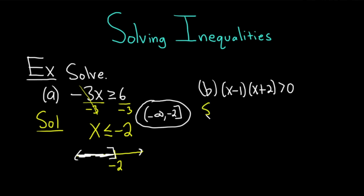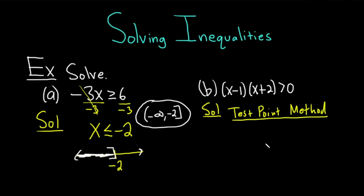Whenever you have an inequality like this where you have something quadratic, you want to factor it first — and that's already been done for us. Notice we have a single term on one side and 0 on the other. Whenever you have something like this, you want to use the test point method. Step one is to make sure you have one expression on one side and 0 on the other. Then you set each piece equal to 0: x minus 1 equals 0, x plus 2 equals 0. This is not an algebraic move — it's just a method we're following. It doesn't follow algebraically.